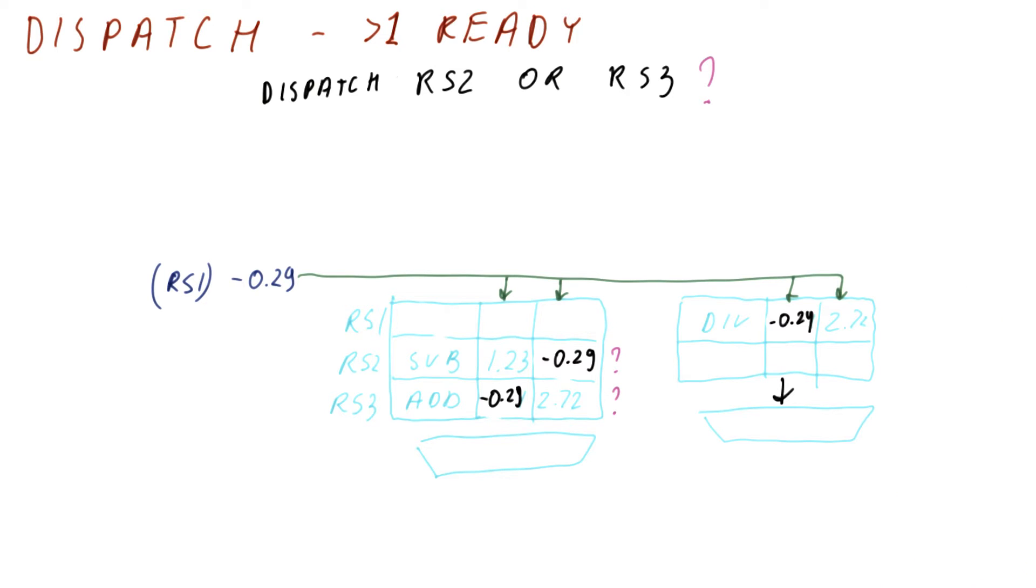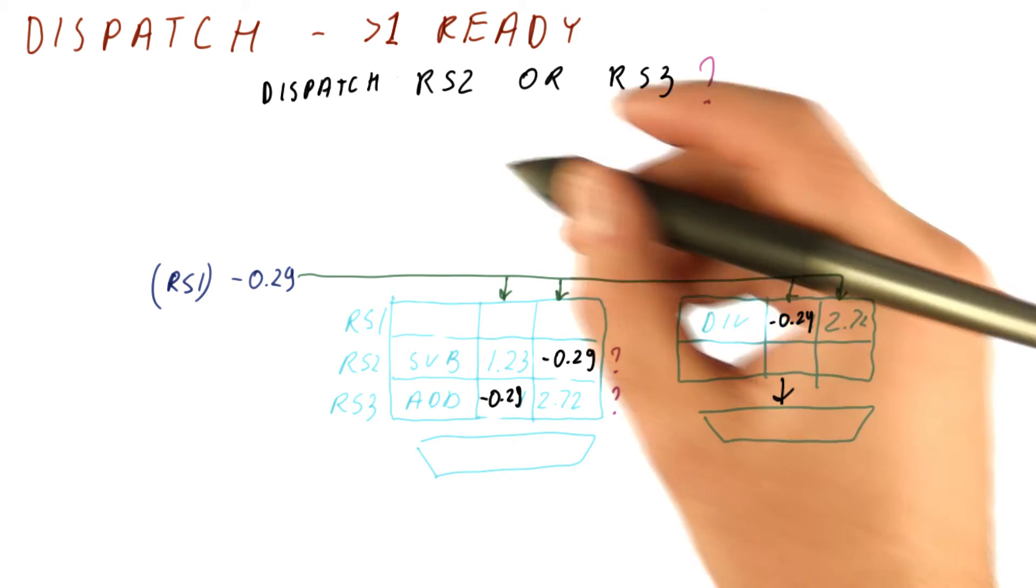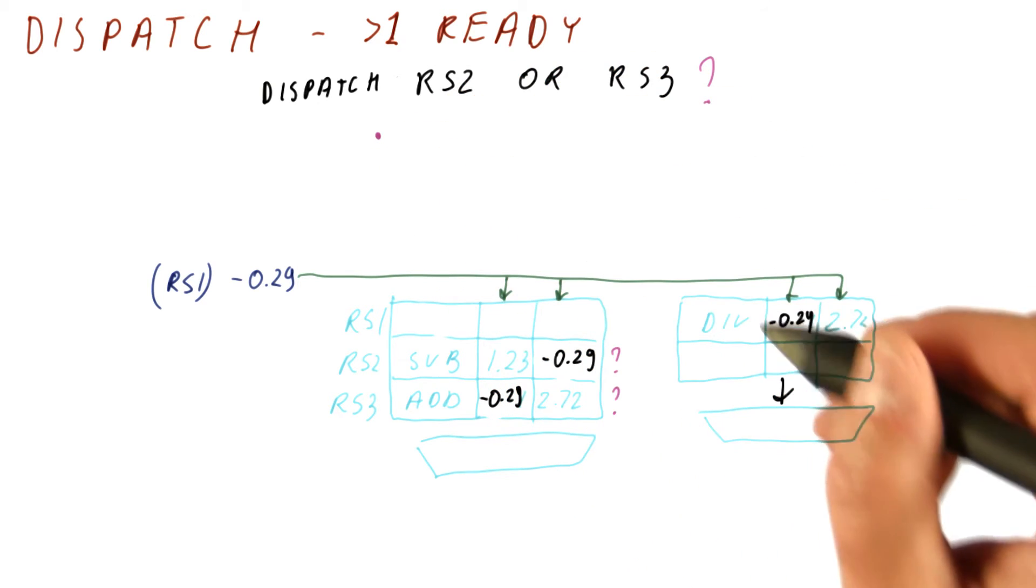So how do we choose this instruction? Well, there are some heuristics. Basically, we cannot really do a perfect job of it, but we can make some reasonably good guesses.